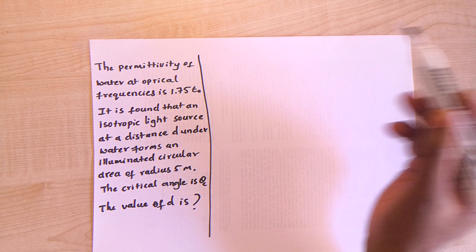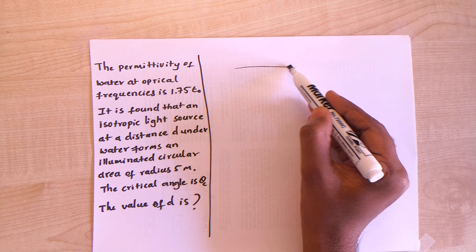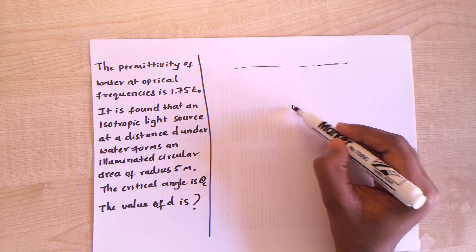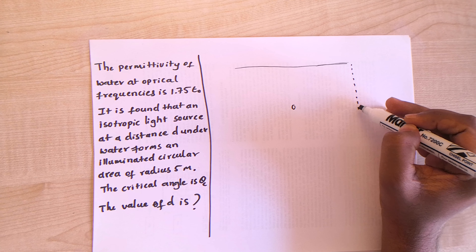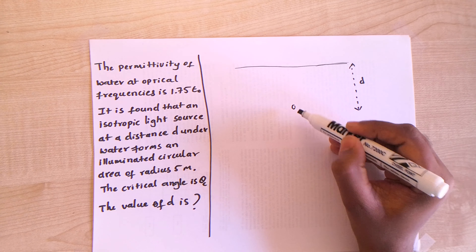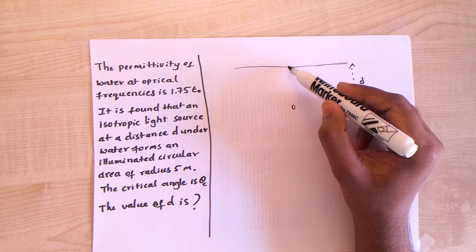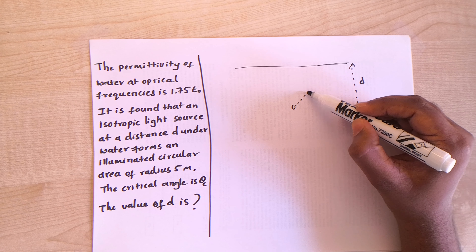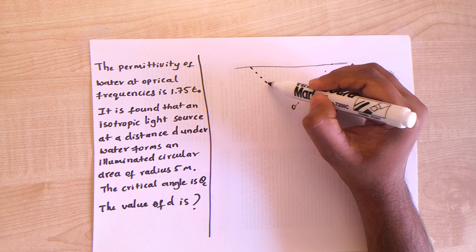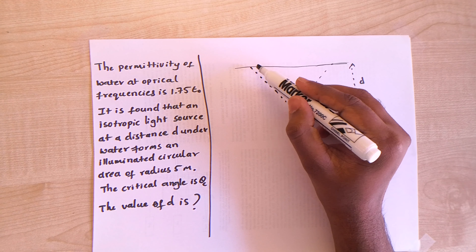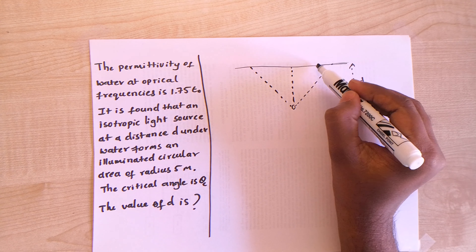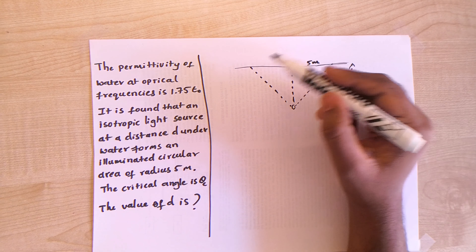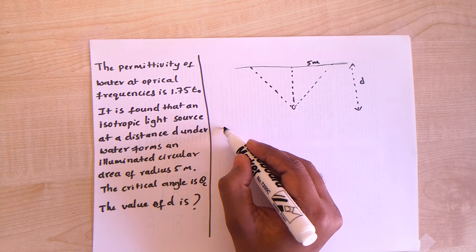This is a nice problem, so let me draw a small schematic. We have a water surface here, and we have an isotropic light source at a depth d. This light source forms a circular illuminated area on the surface of the water with a radius of 5 meters. The first thing to recognize when solving this problem is what concept is at play.